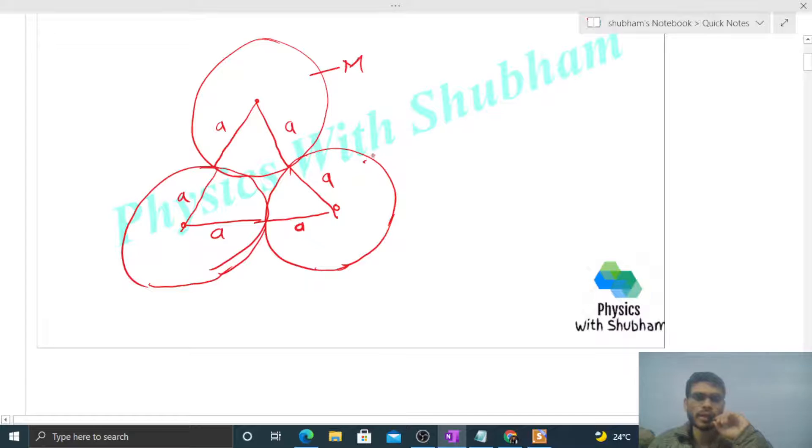Right, so what we can do is assume the entire mass at the center of mass. And the center of mass of a uniform sphere is located at its center.